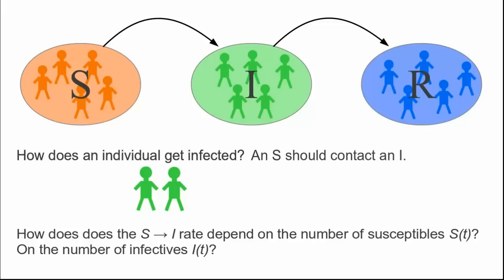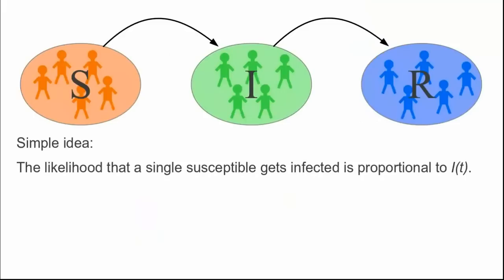How should this rate depend on S of t, the number of susceptible individuals? On I of t, the number of infective individuals? Let's say you are a susceptible person walking around. How does the likelihood that you run into an infective person depend on I, the number of infectives? The more infectives, the larger I is, the more likely you come into contact with an infective or the more contacts you have with infectives. The more contacts you have with infectives, the more likely you'll get infected. The simplest idea is that the likelihood you get infected should be proportional to I.